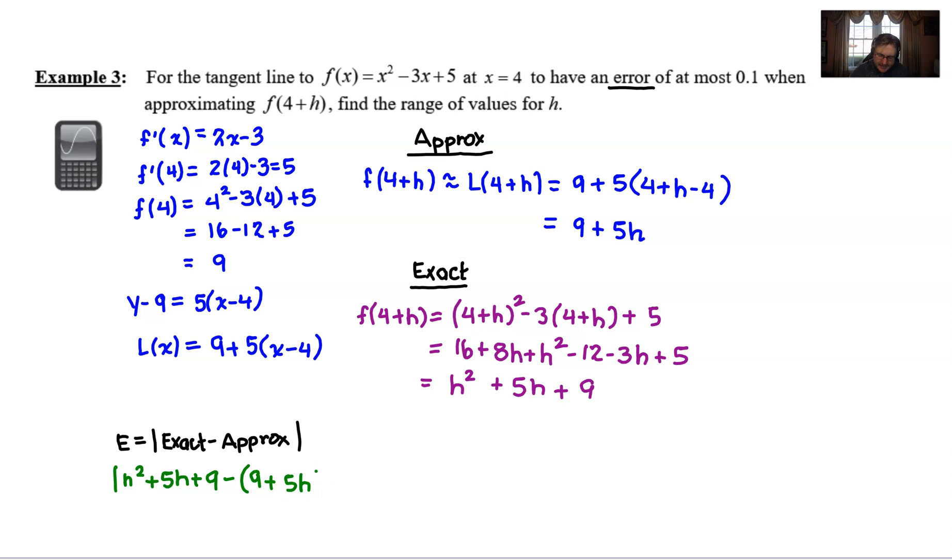You see what we're doing here? We're still subtracting these quantities. It's just that they're not numerical. We're used to them being numerical, but they're not numbers anymore because we've been asked to find this h. And then we remember that the error is supposed to be at most 0.1. Now we have to understand that that is an inequality.